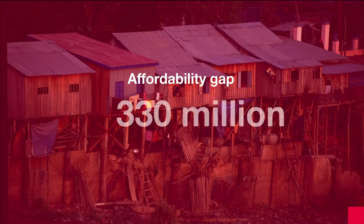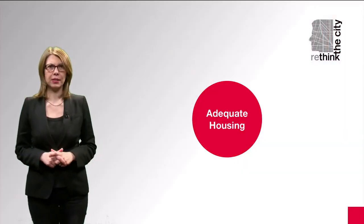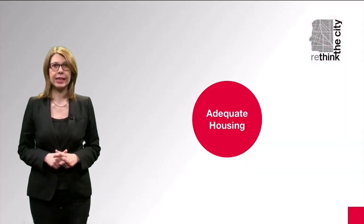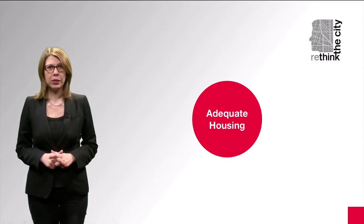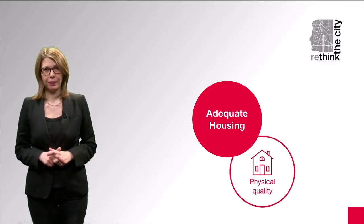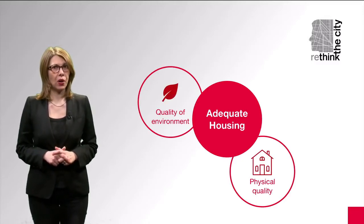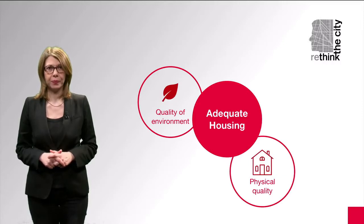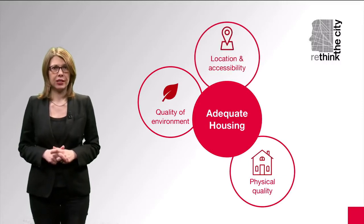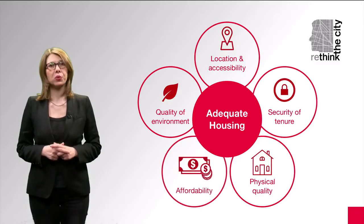330 million people currently live in substandard housing or are financially stretched by housing costs. To tackle these problems, a comprehensive approach to housing policies is needed. This means that, in order to attain adequate housing, policies should integrate at least five key aspects: the physical quality of the dwelling, the quality of the environment where the dwellings are located, the location and accessibility, security of tenure, and affordability.